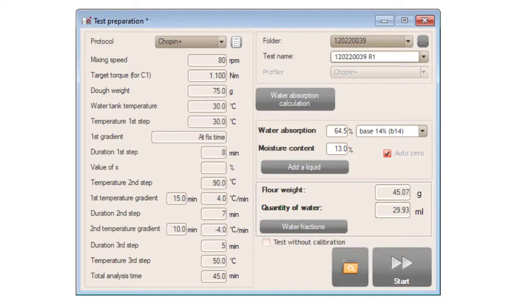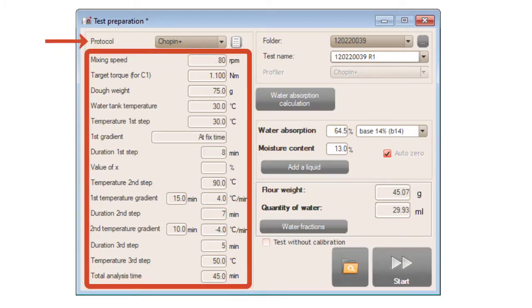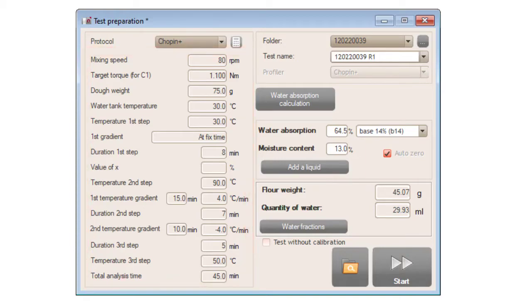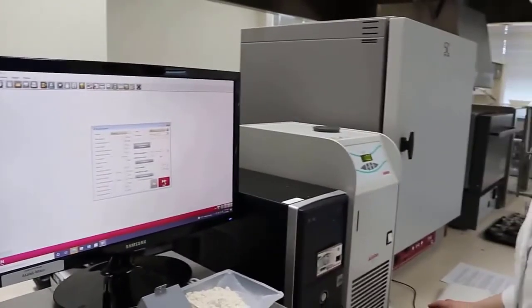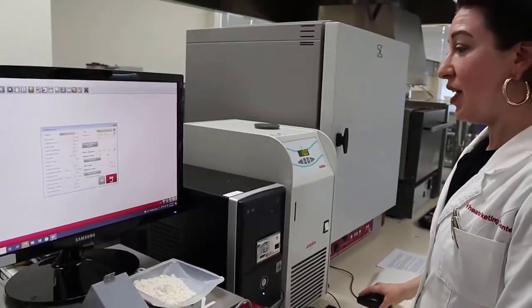So I've already decided that I'm going to use the Chopin Plus protocol. It lists all the parameters right here, but of course, you can always change these parameters and choose a different protocol if this is not ideal for the flour you want to test. So let's go ahead and start the test.